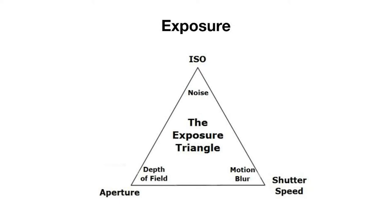Aperture refers to how large an opening in the camera's lens is, which will impact how much light is able to enter through the lens and into the camera. A smaller opening will allow less light in and will result in a darker image, while a larger opening will let much more light in and result in a brighter image. A side effect of this is something called depth of field, which impacts how much of the image is in focus and how much is blurry.